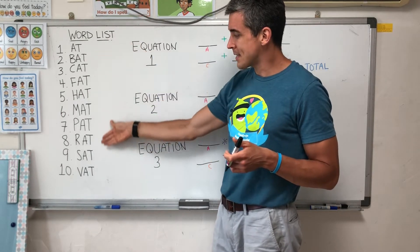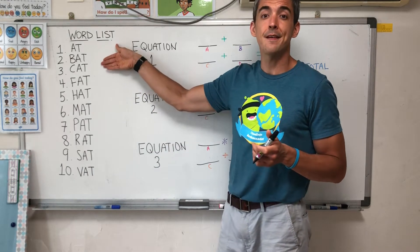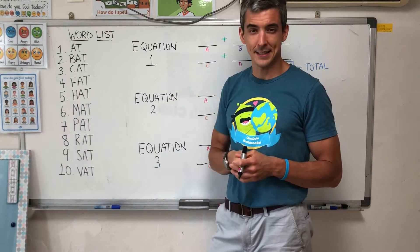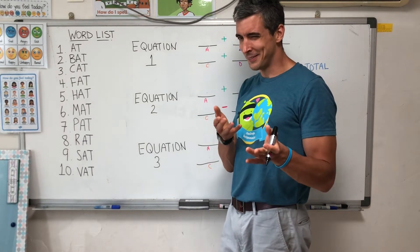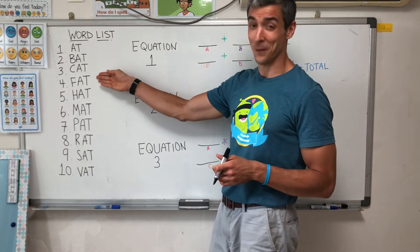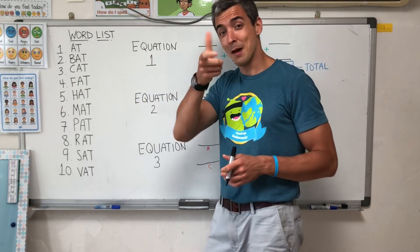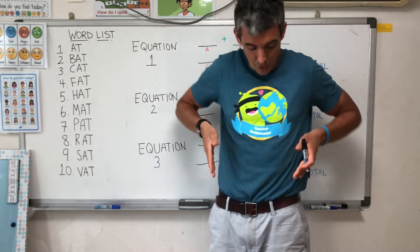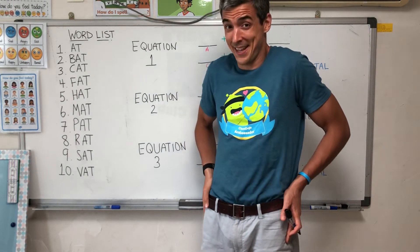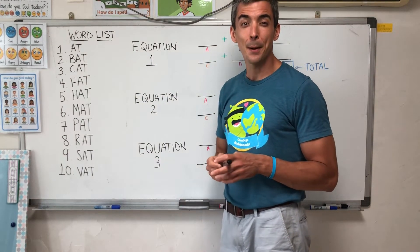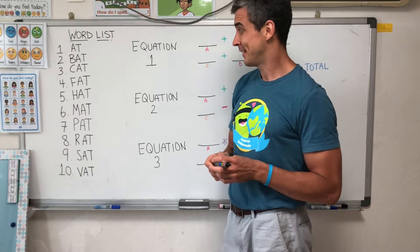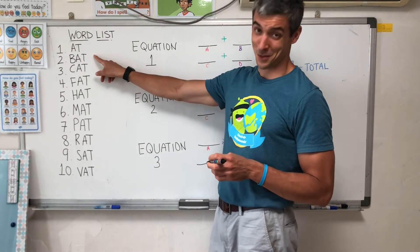Number four is f, f, fat. Do you know? Number four. The opposite of fat is skinny. Okay, good. What number is b, b, bat? Number two.